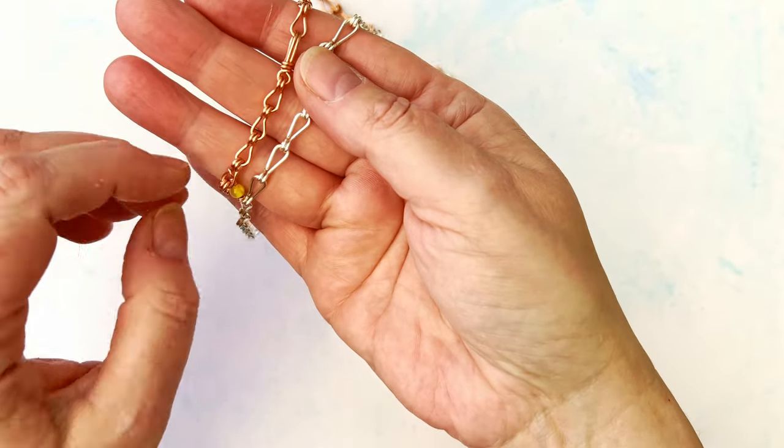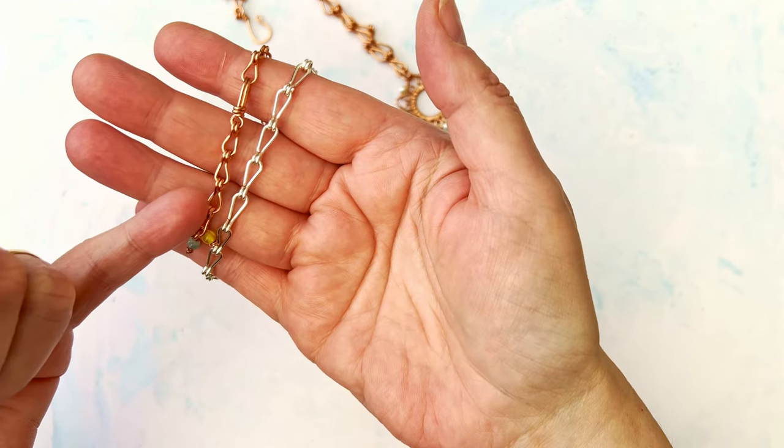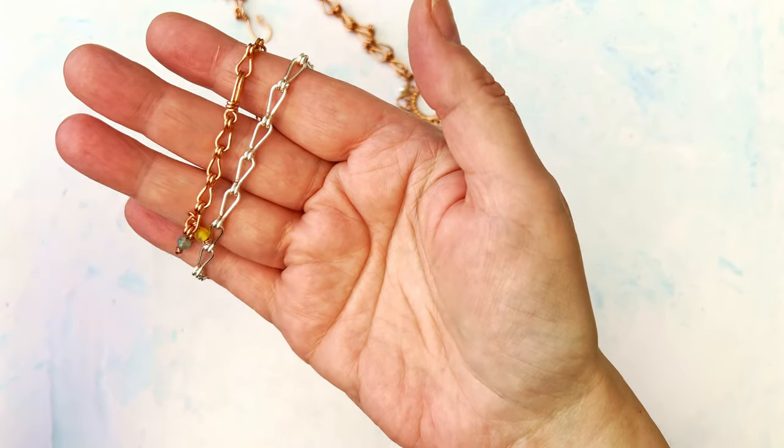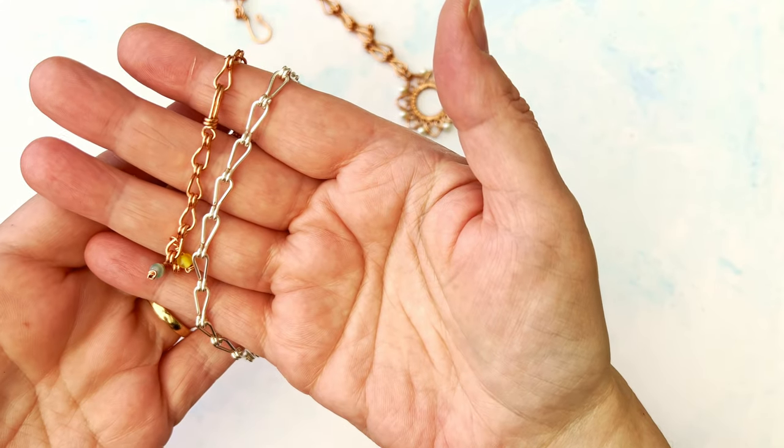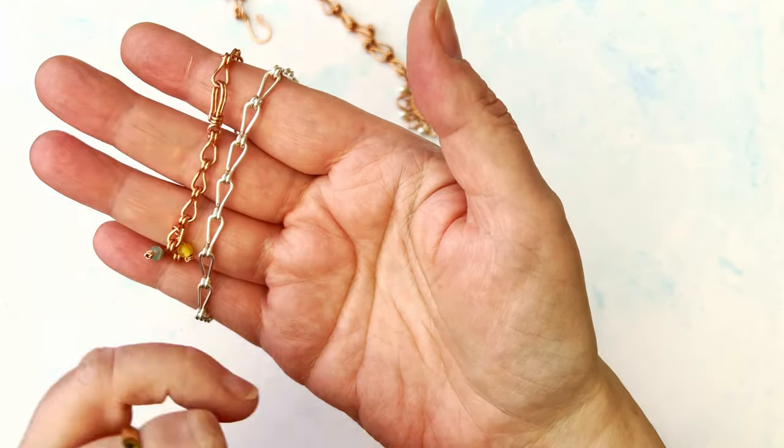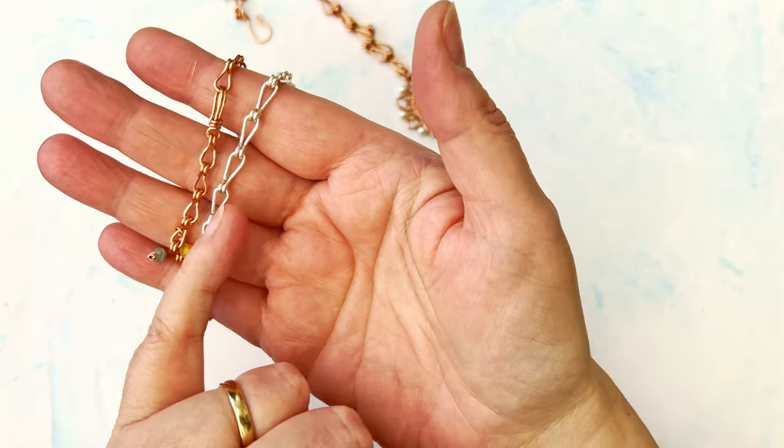And this one here is made with three and a half centimeter lengths. Can you see the slight difference in the size? These ones are more stubby and cute and smaller, and these ones are more elongated. So the length of your initial wire determines the size of the finished link.